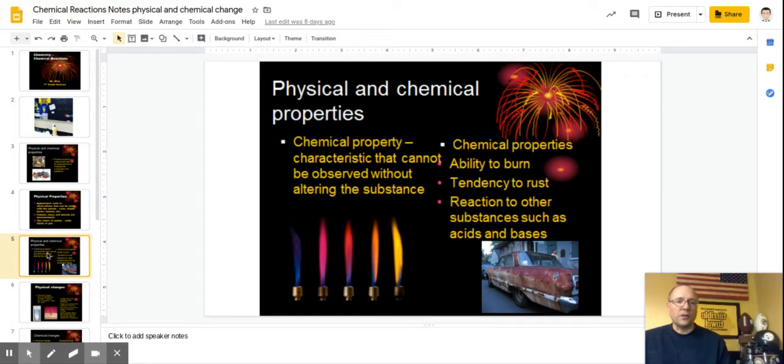A chemical property is a characteristic that cannot be observed without altering the substance. Chemical properties include the ability to burn, the tendency to rust, or corrode, or react with other substances. And those reactions to other substances could be such as acids and bases. So I have an image here with a variety of different color flames. If you recall the flame test with its ability to burn. And then I have a picture of a rusty car. Iron is used in the bodies of cars and iron tends to rust. And rust is a chemical reaction. So chemical property is whether or not something could burn, something could rust, or something could react with other substances such as acids and bases.